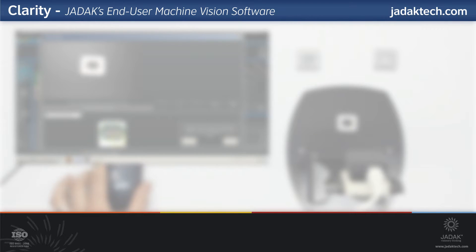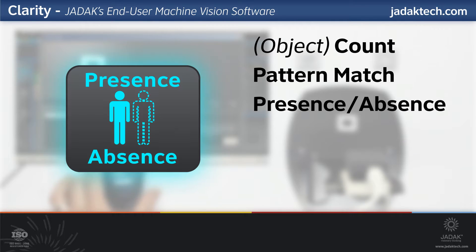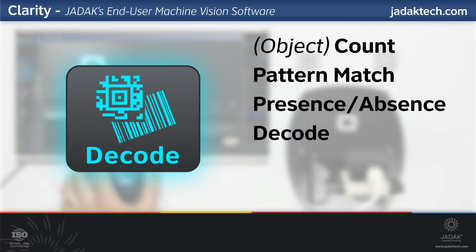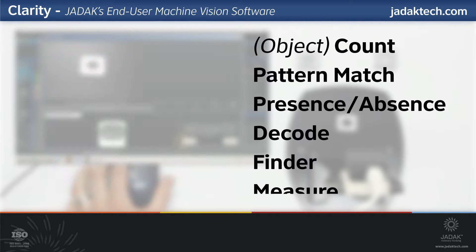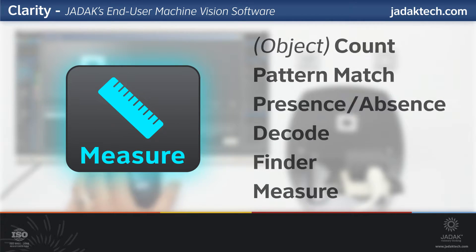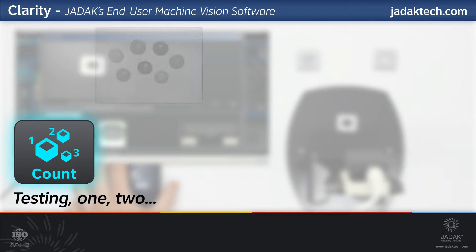There are six machine vision plugins: object count, pattern match, presence/absence, decode, finder, and measure. Let's get started.